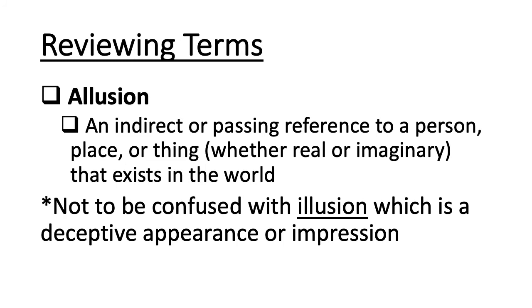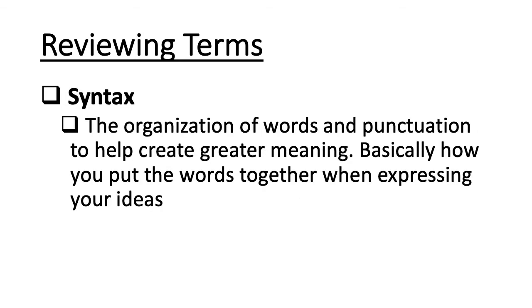Allusion — remember, this is a reference to something that exists, whether it's real or imaginary, something that exists in the world. Don't confuse it with illusion, which is a deceptive appearance. Illusion with an 'i' is deception; allusion with an 'a' is a reference to something that exists.